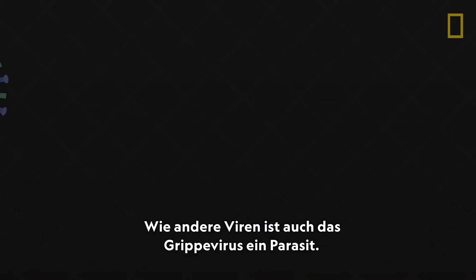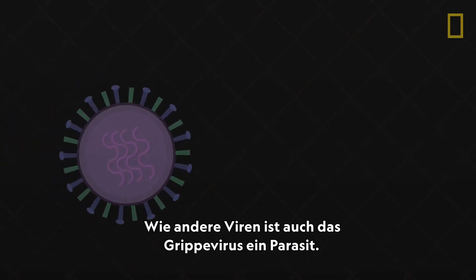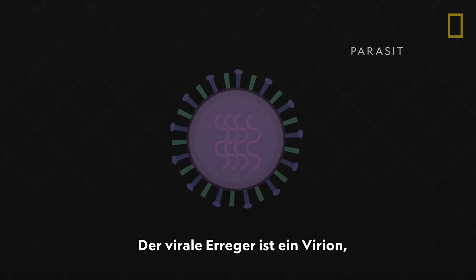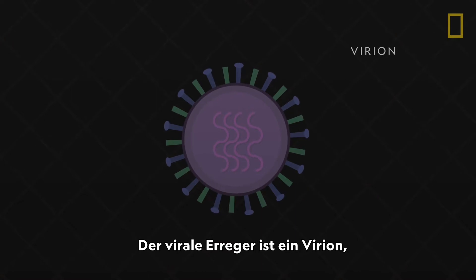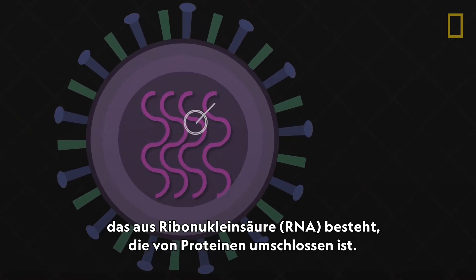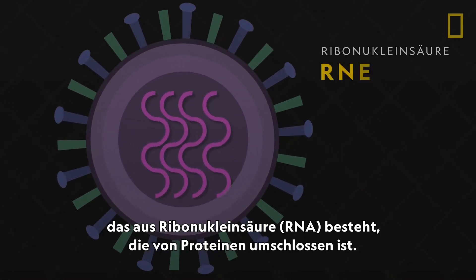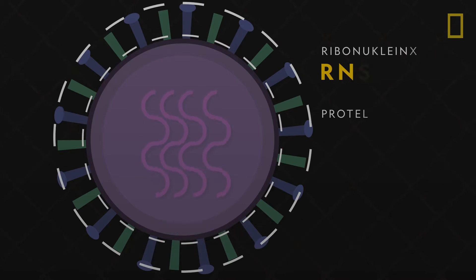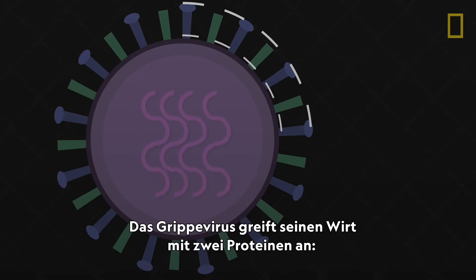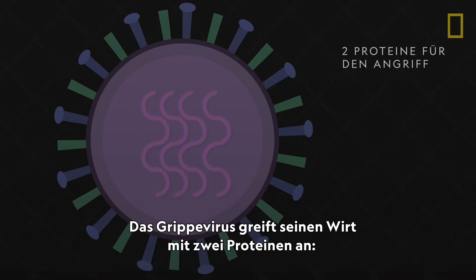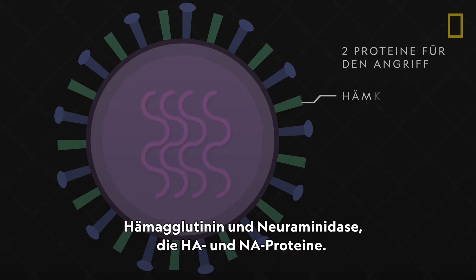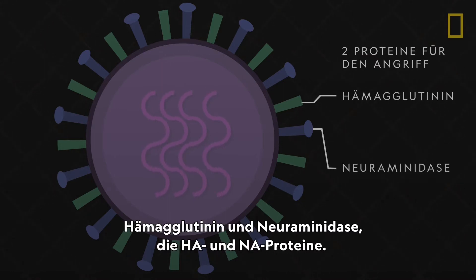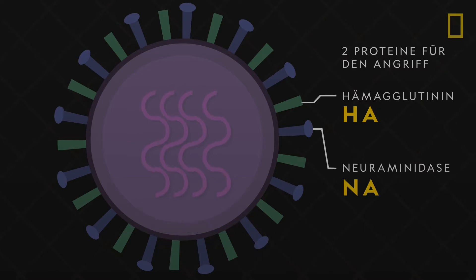Like other viruses, the flu virus is a parasite. The viral agent itself, called a virion, is made of a ribonucleic acid, or RNA, surrounded by proteins. The flu virus uses two proteins to attack its host: hemagglutinin and neuraminidase, or the HA and NA proteins.